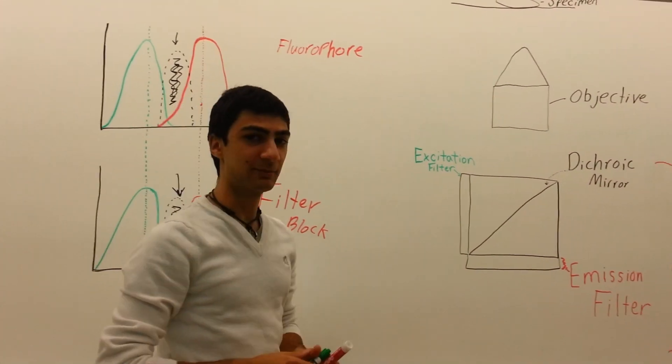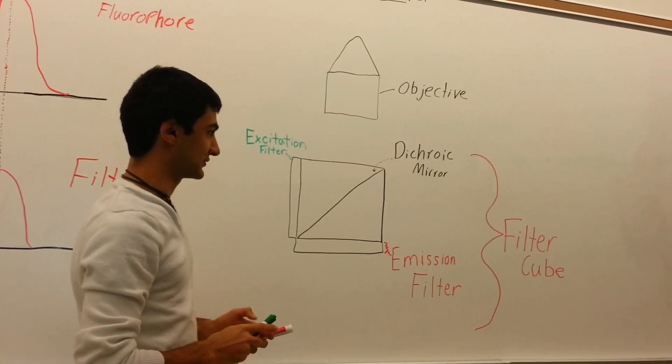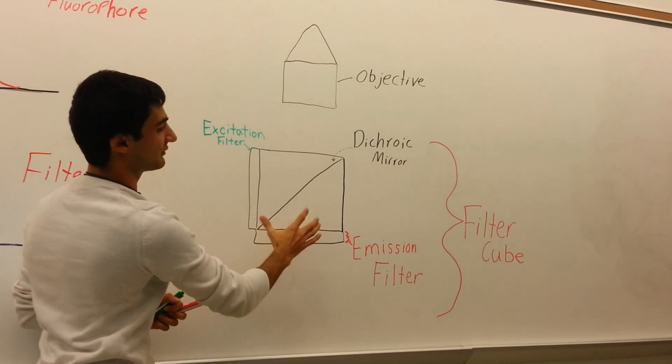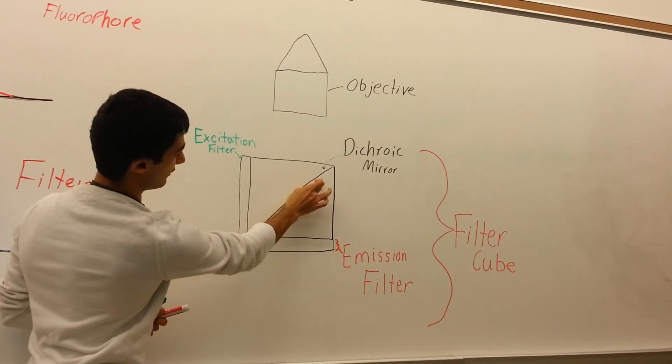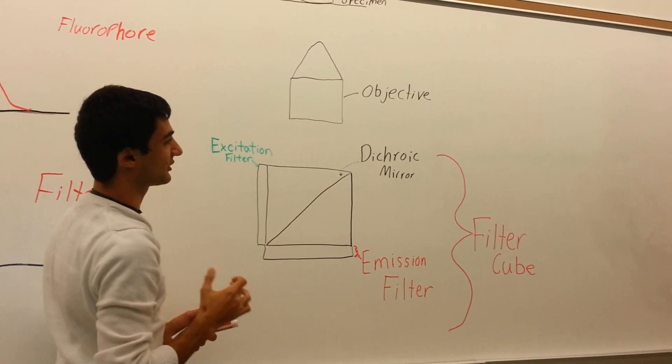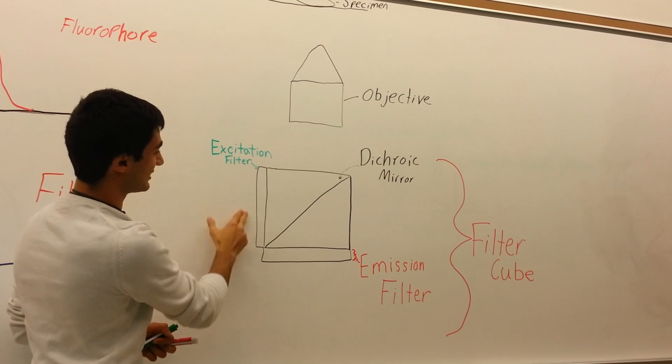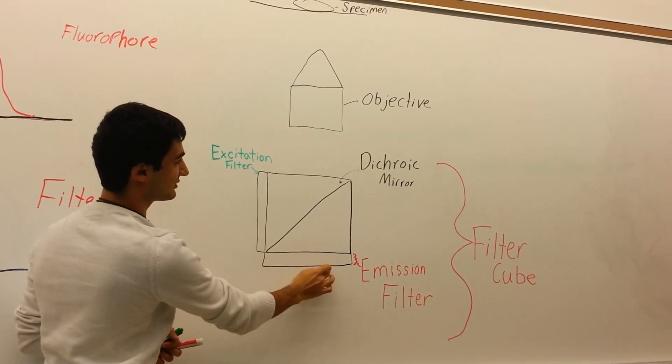Now I am going to talk about the light path of the fluorescence microscope. Over here we have what is called the filter block, and this line right here depicts what is called the dichroic mirror. Over here we have the excitation filter, and this is the emission filter.